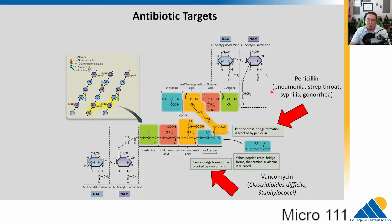Penicillin is used to treat things like pneumonia, strep throat, syphilis, and gonorrhea. Vancomycin, a different antibiotic, affects a different part of the peptide bond and might be used on C. diff or staphylococci, although some are now resistant to that.